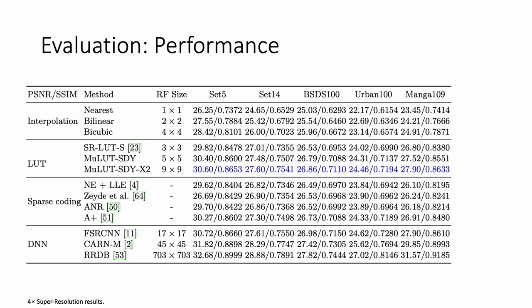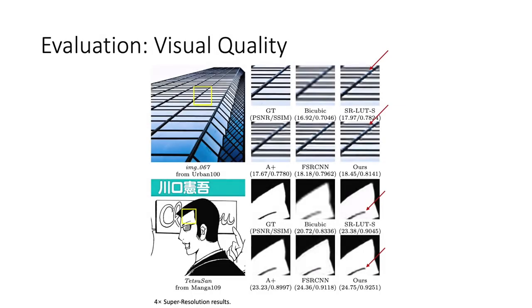In the above ways, MuLUT boosts the performance of SR LUT significantly, achieving similar or better restoration results as deep neural networks. Besides, MuLUT obtains better visual quality than SR LUT and comparable quality with FSRCNN.